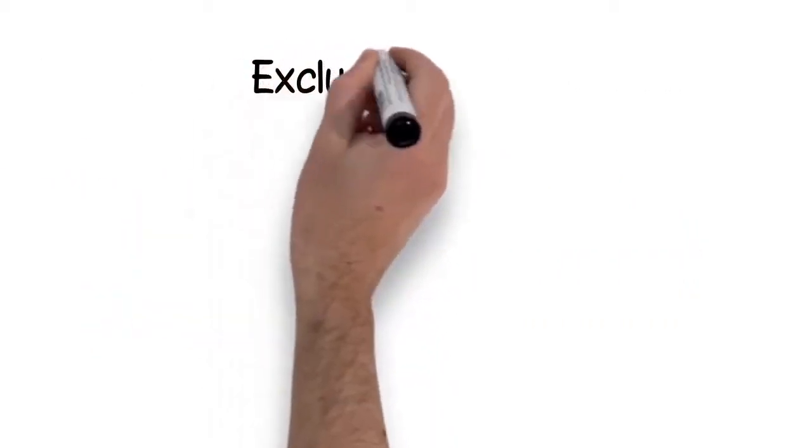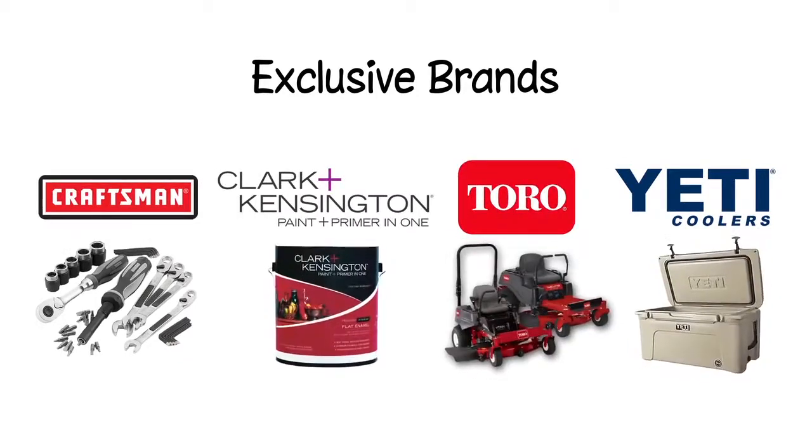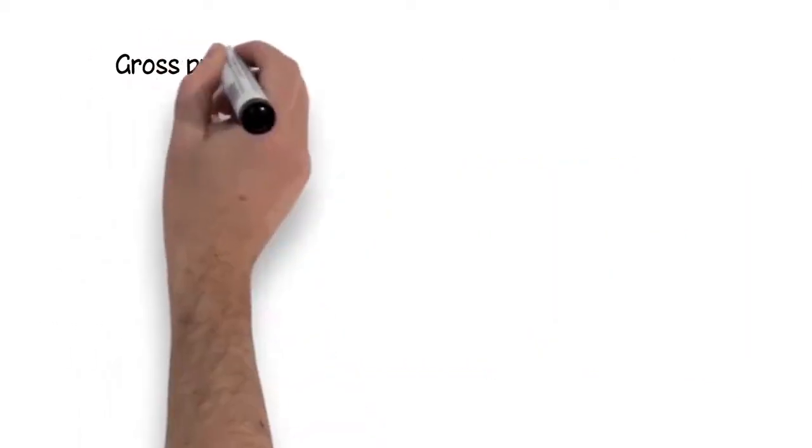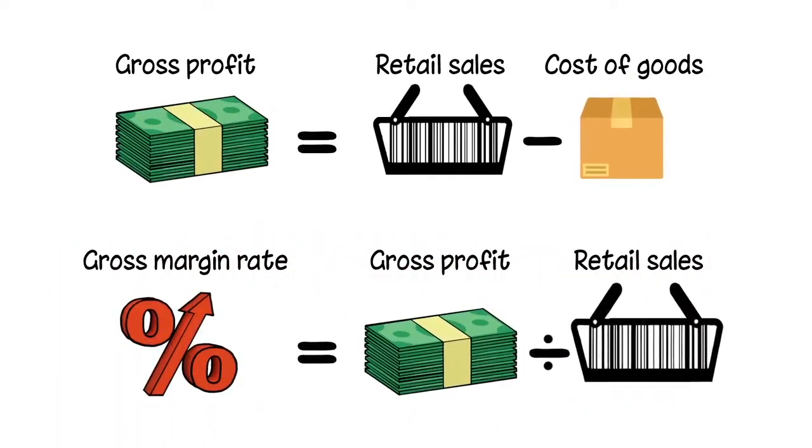We will also continue to add to our stable of exclusive brands such as Craftsman, Clark & Kensington, Toro, and Yeti. These assortment enhancements will lead to increased gross profit dollars and higher gross margin rates for our retailers.